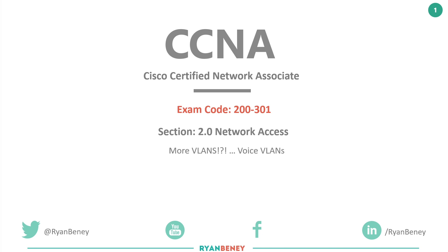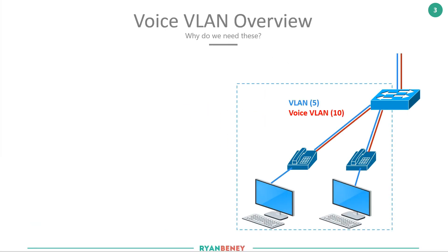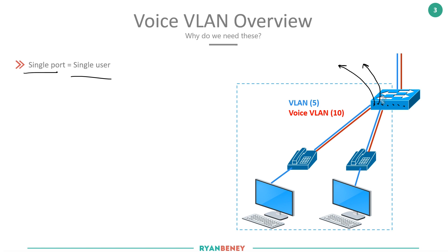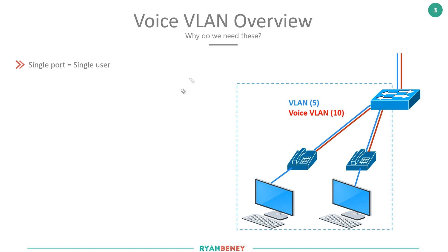Voice VLANs ultimately enable us to use a single port for a single user. There are some enterprises that don't do this, mainly because they were set up wrong and never changed. Without voice VLANs, you would literally have your PC plugged into one port and a phone plugged into another port. On a 24-port switch, half those ports would be consumed by telephones, meaning you'd need more physical switches across the network to accommodate everyone.